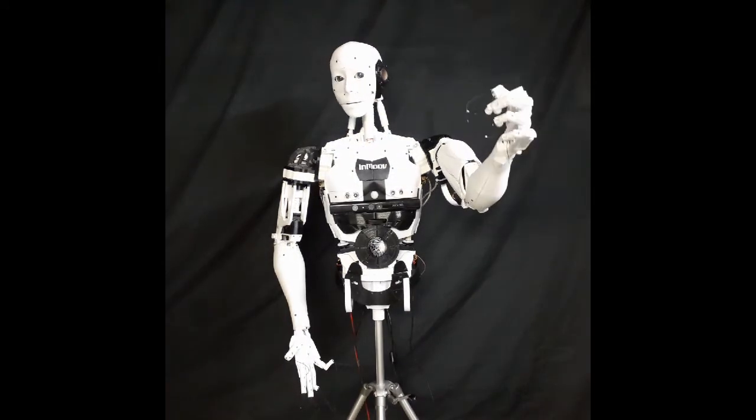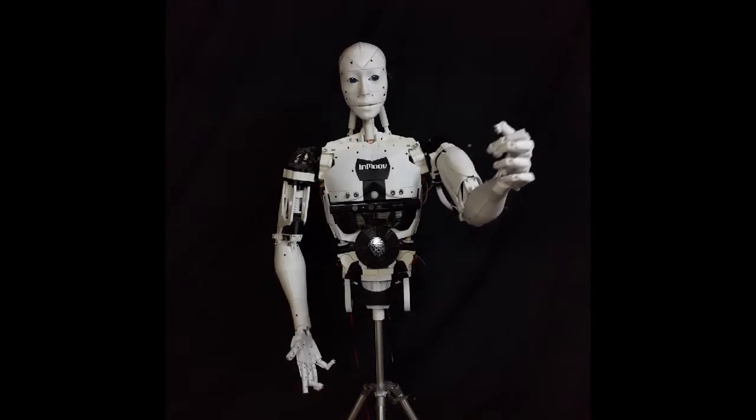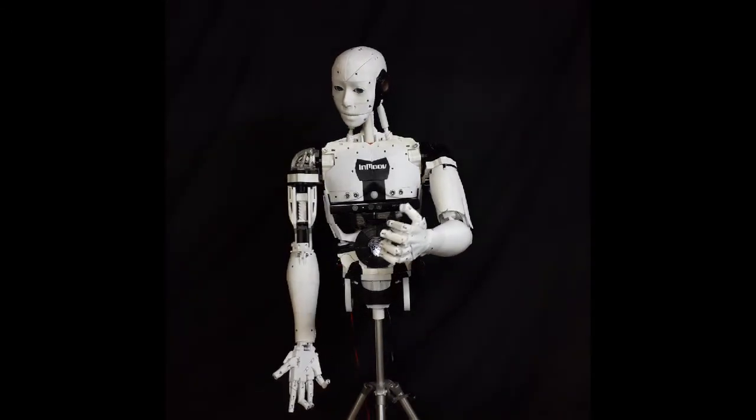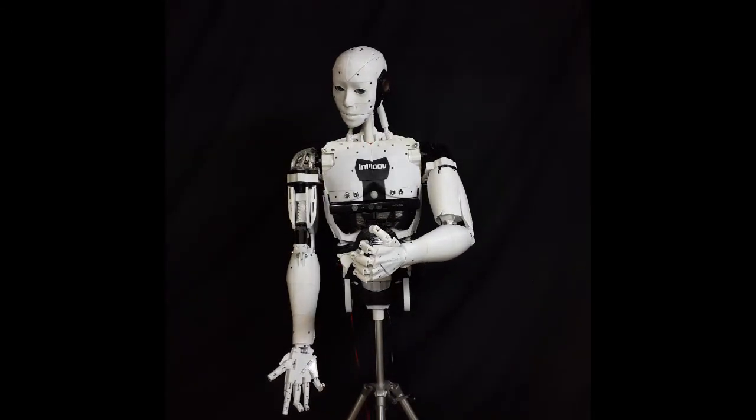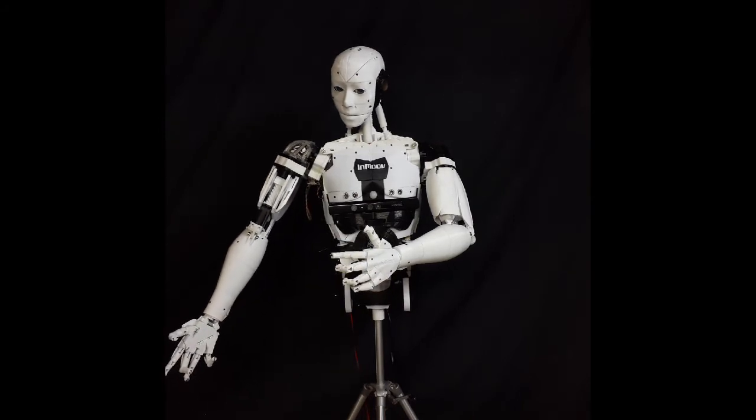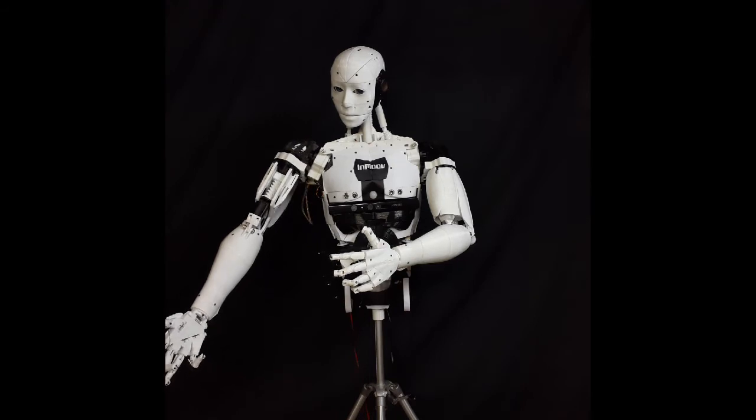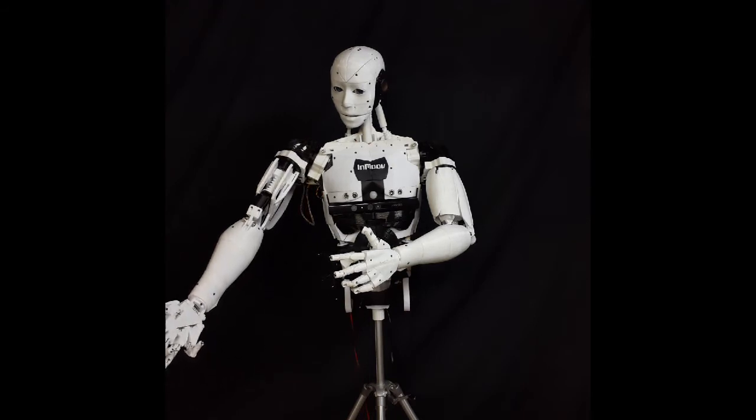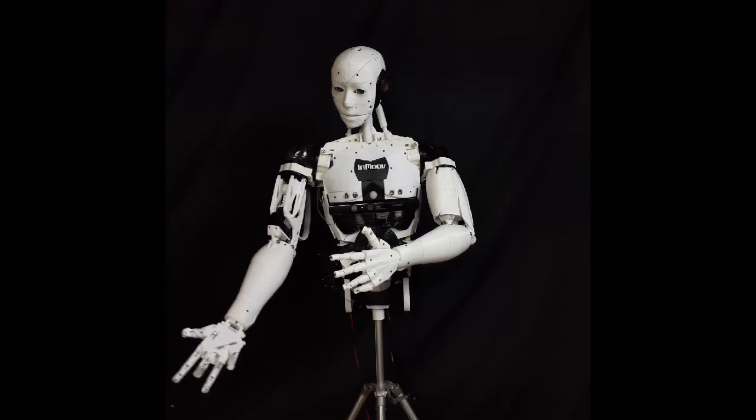And see those there. There's three servos in each shoulder. Here is the first servo movement. This is the second one. Now you see the third. They give me a more human-like movement.